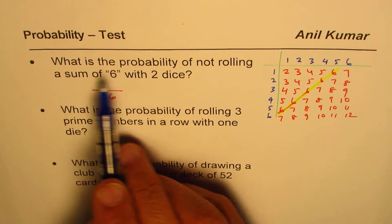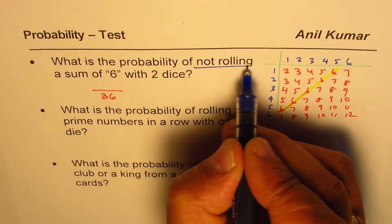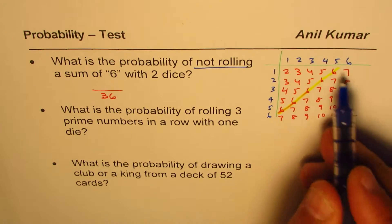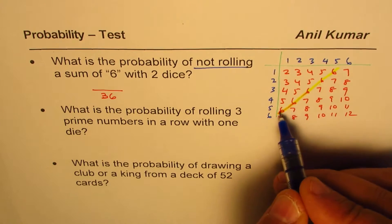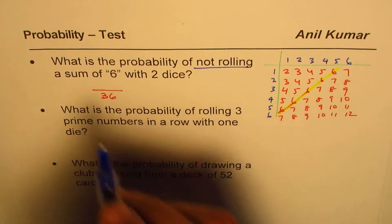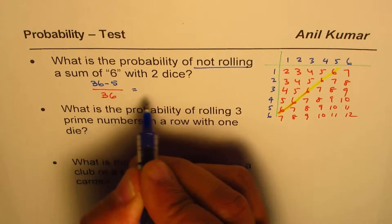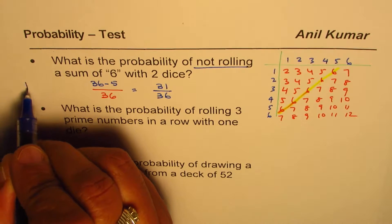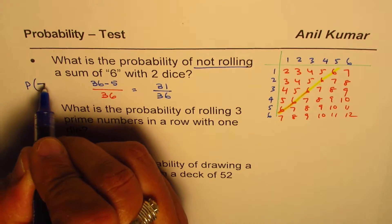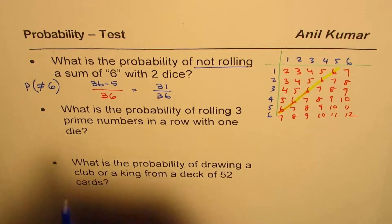So 1, 2, 3, 4, just 5. The question is what is the probability of not rolling a sum of 6, so except for these 5, all others are fine. So what we should write here is 36 minus 5, correct. So 31 over 36 is the probability of sum not equal to 6. That is how you should be answering this question.